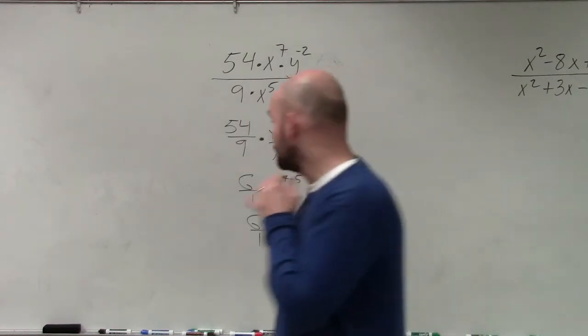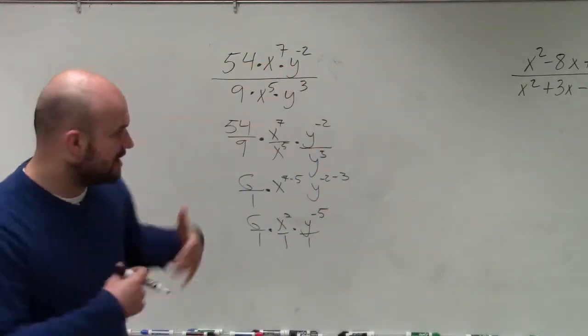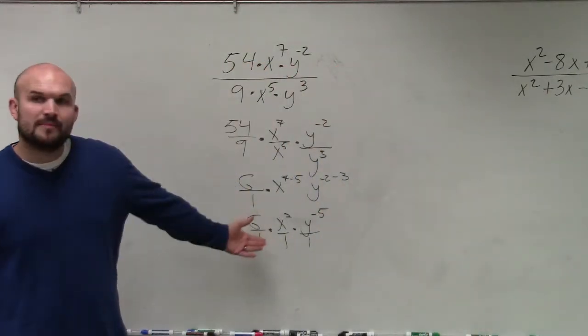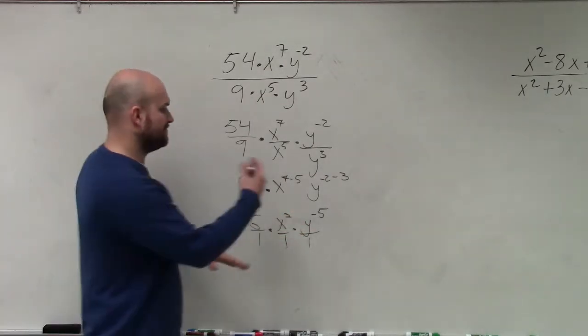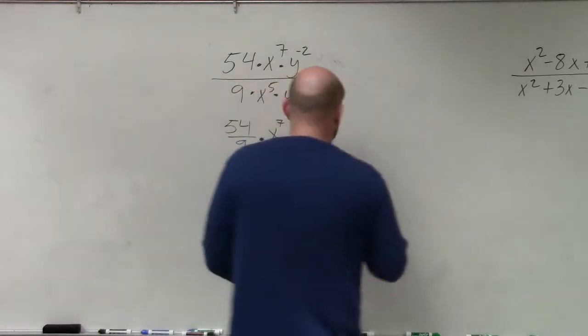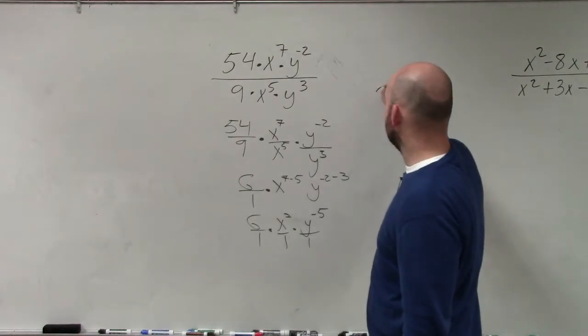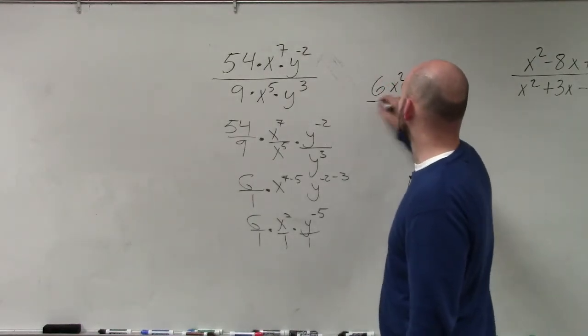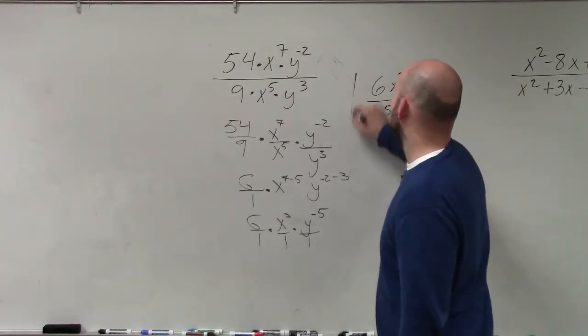So we also need to make sure now at the end, we need to make sure to write our final expression. We remember that we cannot write this with negative exponents. So therefore, I'm going to write this over in the denominator. So my final answer would be 6x squared over y to the positive fifth.